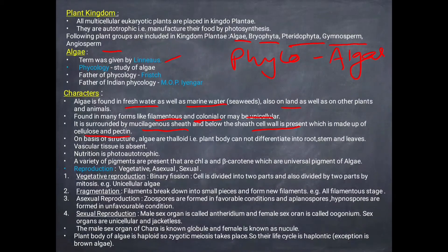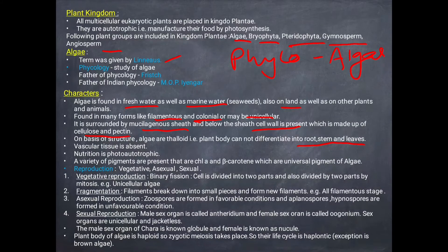The body of algae is called thalloid because there is no differentiation into roots, stem, and leaves — the whole body is the thalloid. Vascular tissues are also absent. The nutrition is photo-autotrophic, meaning food is synthesized with the help of light.